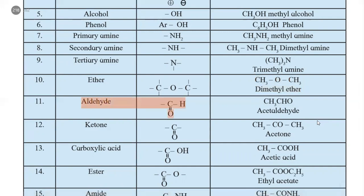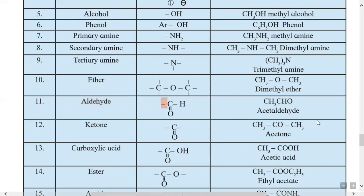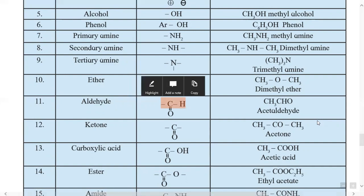The eleventh type is aldehyde, having functional group CHO (C double bond O with H). Example is acetaldehyde (CH3CHO); replacing CH3 with hydrogen gives formaldehyde. We had studied the homologous series of aldehyde: formaldehyde, acetaldehyde, propionaldehyde, butyraldehyde, and valeraldehyde — all containing the same CHO functional group.